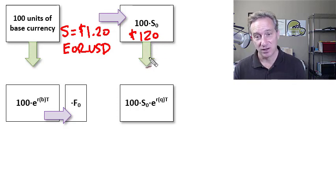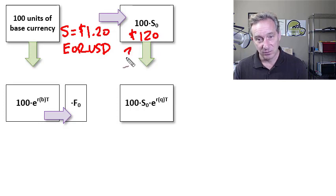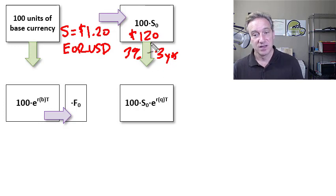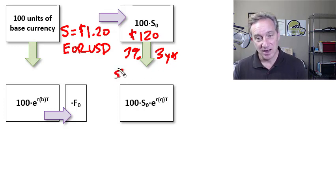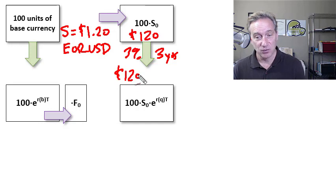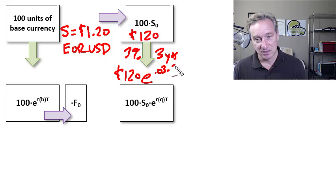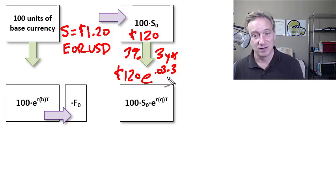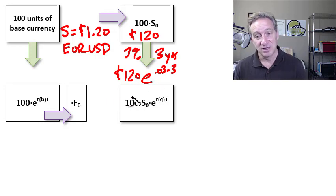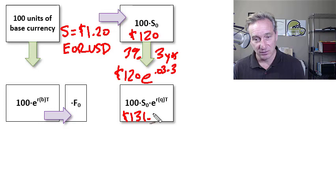And then I let that grow or compound at the U.S. interest rate, which I will assume is 3%. And let's do that over three years. And so that at the end of three years, I would have 120 U.S. dollars multiplied by e raised to the 3% times 3. I'm compounding continuously. So you can see it's e raised to the 0.09. And so that at the end of three years, I would have, it looks like, $131.30. That was my first choice.